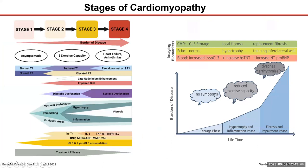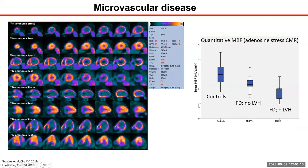T1 values are first reduced, then increase as late gadolinium enhancement occurs during later disease stages. Systolic dysfunction is very rare, happening only in late stages. There's a transition from a storage phase (up to about age 20) to an inflammation phase and finally a fibrosis and replacement phase. Coronary microvascular dysfunction can be detected using PET — flows are abnormal — and also on adenosine stress CMR. I routinely do CMRs, and occasionally stress CMRs to calculate myocardial blood flow in patients with angina, combining all information in one study.